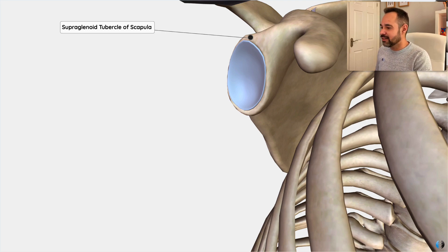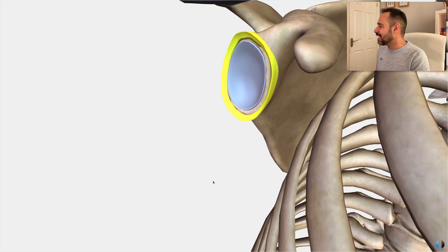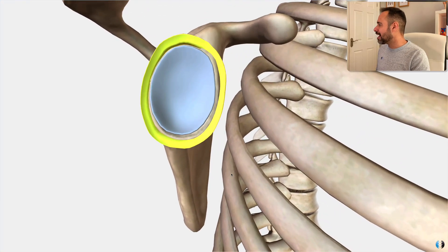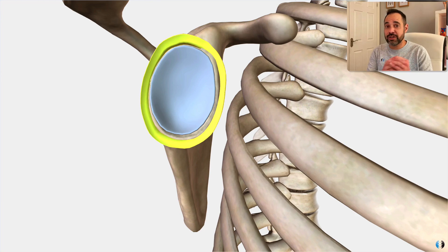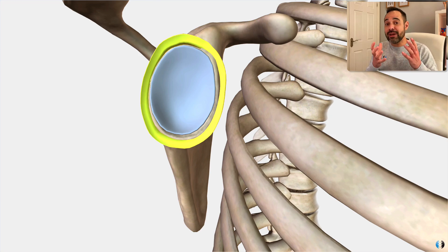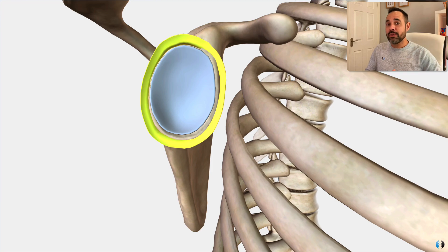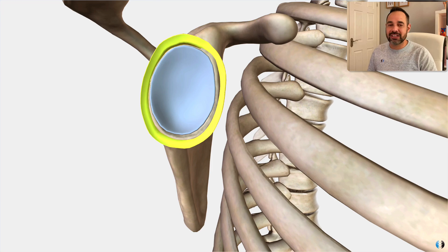The tendon also partially attaches to the glenoid labrum — the fibrocartilaginous ring around the glenoid — partially blending with the superior aspect of that labrum as well as the supraglenoid tubercle. This is really important: in the under-40 age group, significant trauma involving the long head of biceps tendon tends to cause a SLAP tear, whereas in the over-40 age group, because the tendon is more degenerative, the patient tends to suffer a long head of biceps tendon rupture instead.